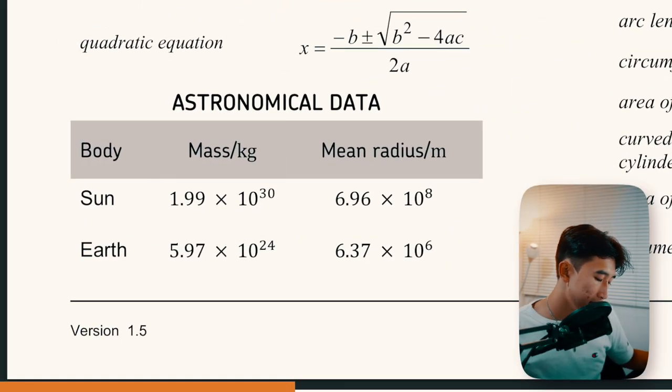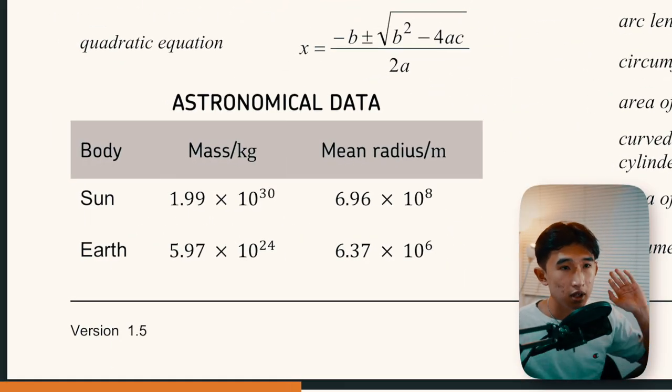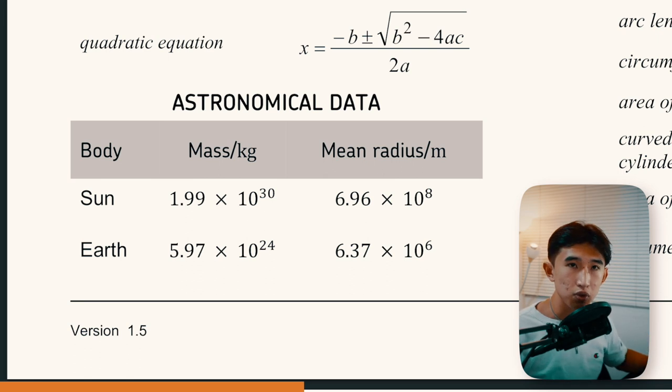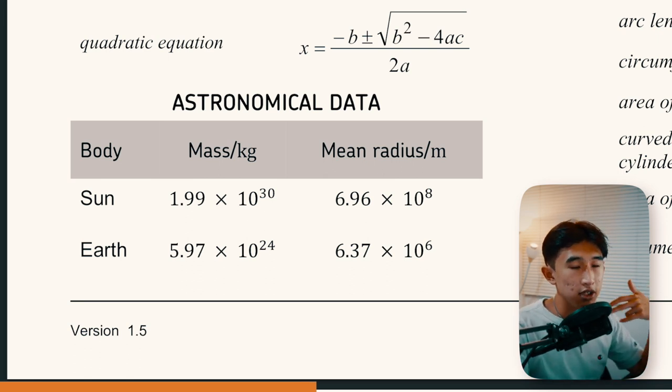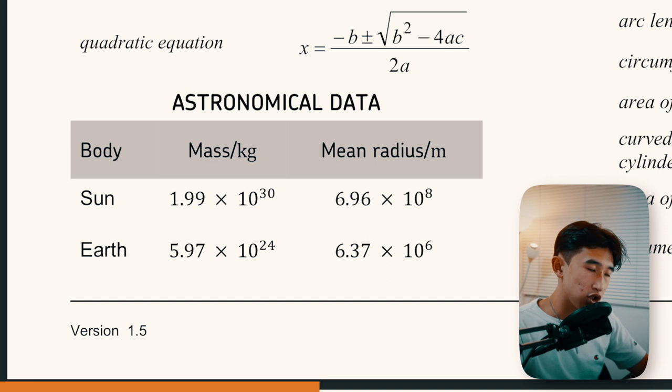As for astronomical data with the sun and the earth, this is constantly used when you're dealing with gravitational fields, orbits, and the gravitational field chapter.